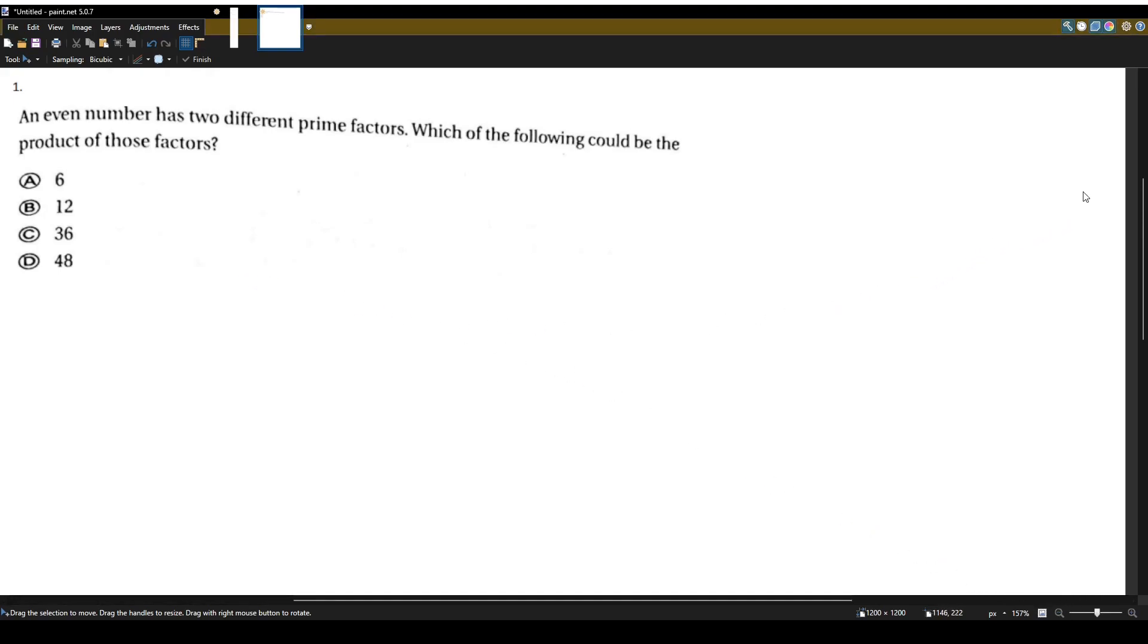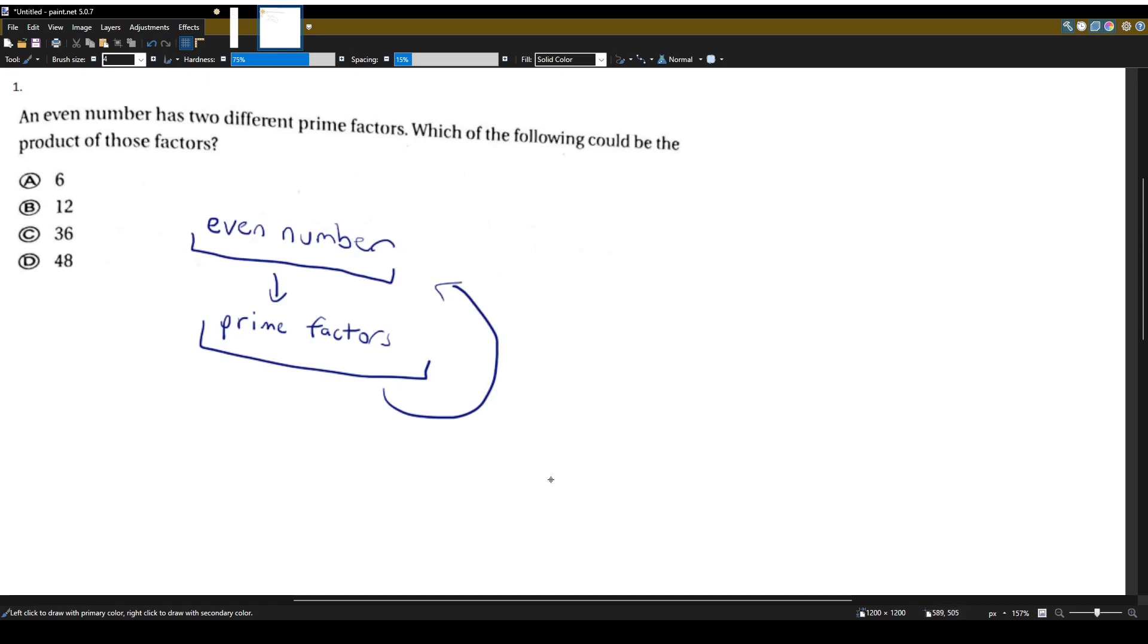So this question is asking us to find an even number, find all the prime factors, find the prime factors of that even number, and see if two of the prime factors can multiply back to that even number. So that might sound a bit abstract, so let's show you what's going on with the first choice, number 6.